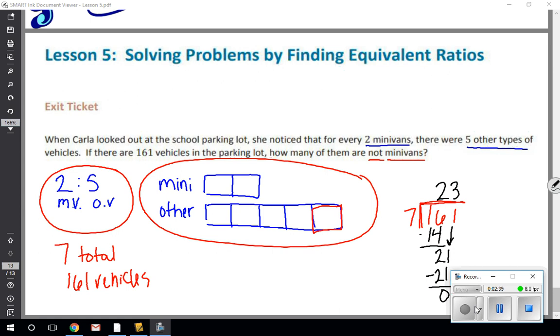Now that 23 tells me that each of these squares has to represent 23, and I'm filling this one in because again the question asked how many are not minivans. So I know that each of these are 23 as well, but these represent the minivans. So the other vehicles are the ones that I'm concerned about of not minivans.